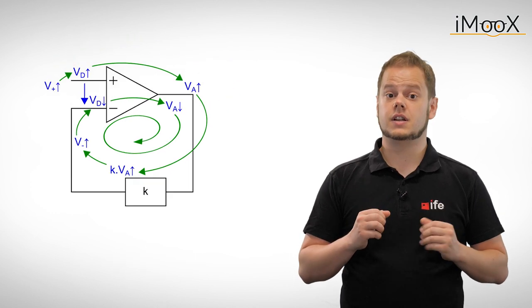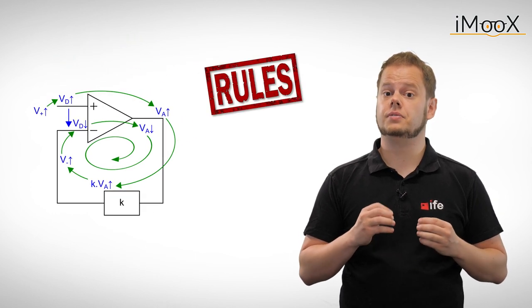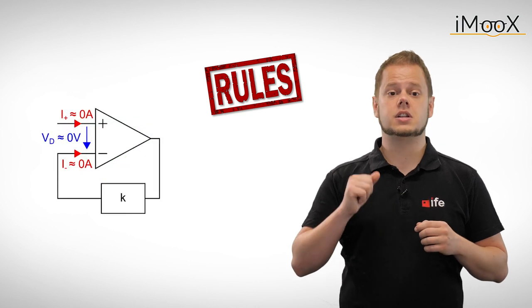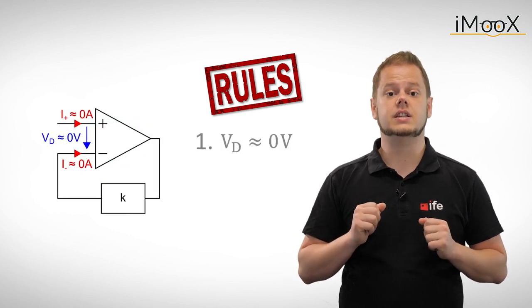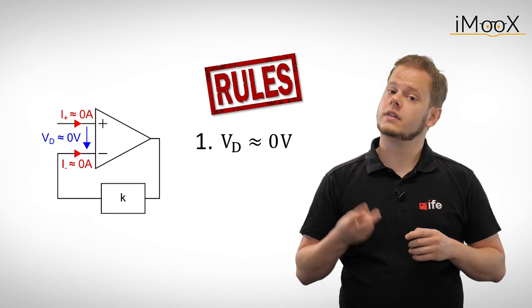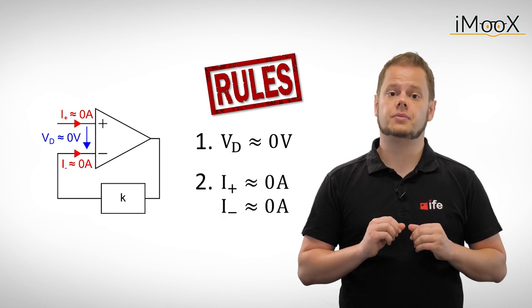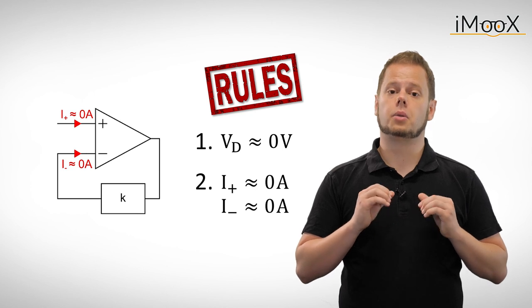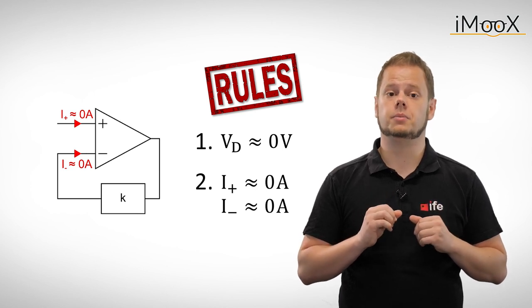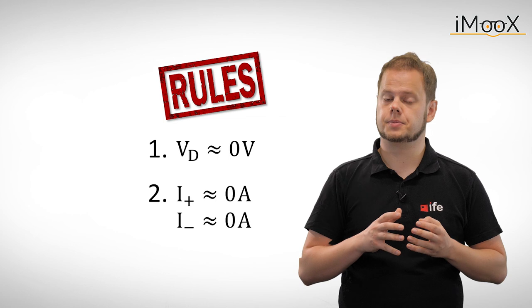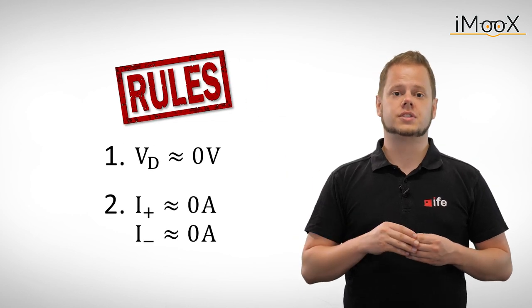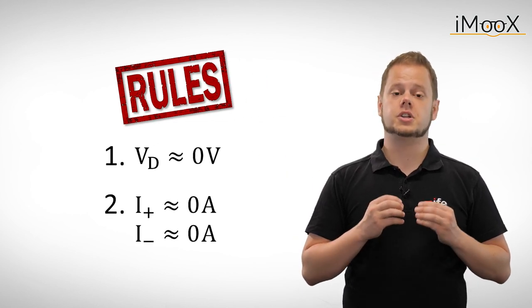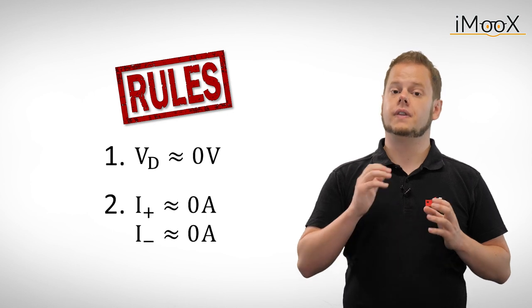This results in our new rule set for negative feedback circuits. The differential input voltage VD is zero volts. The second rule stems directly from the previously second rule: the currents flowing through the inverting and non-inverting inputs are zero amps. These two rules are all we need to solve operational amplifier circuits with negative feedback.